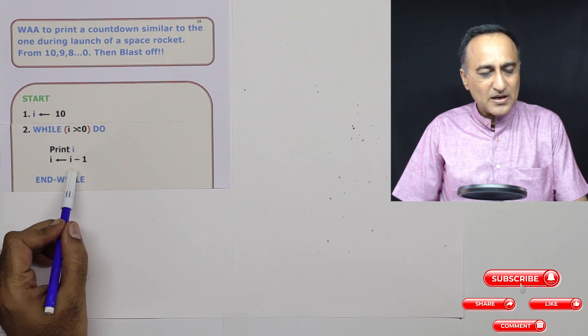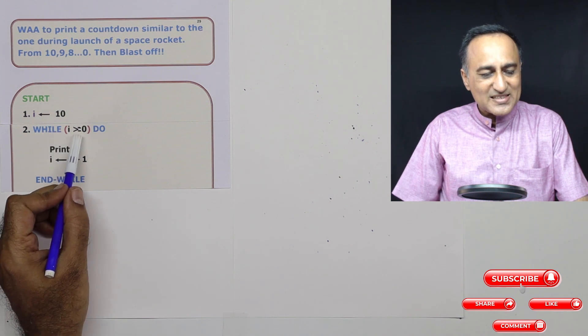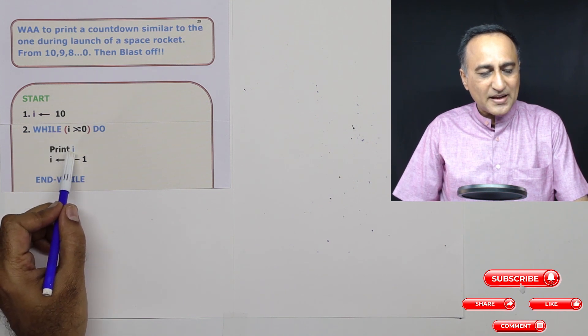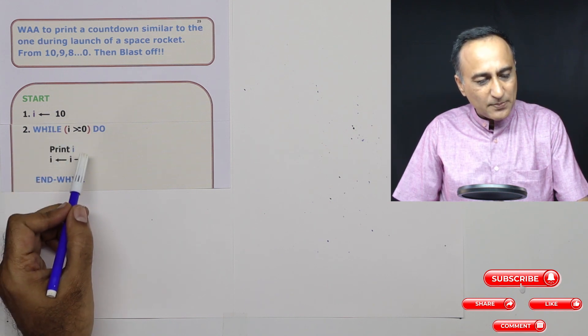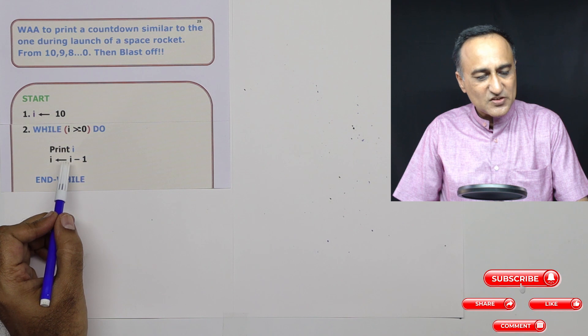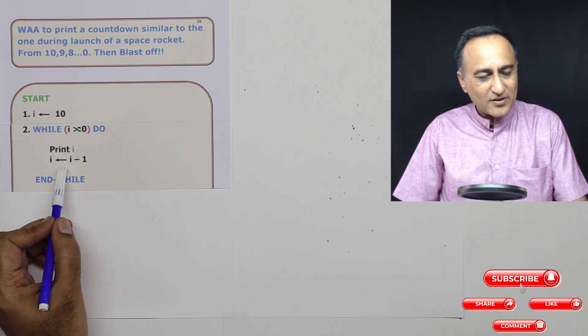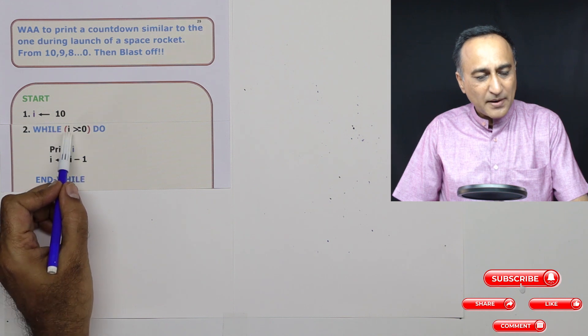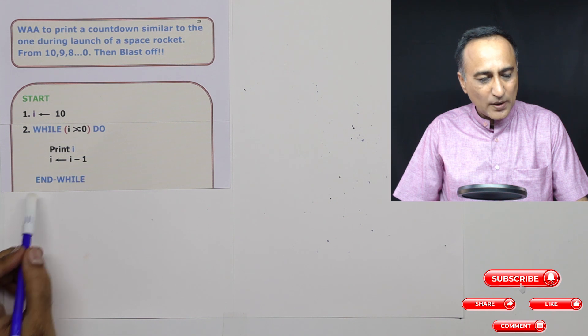I now next ends up becoming 9. You go back here, then 9 is greater than or equal to zero, it will print 9. I becomes 8. So this process will keep repeating till I reaches zero. When it prints zero, I after that will become minus one. Minus one is not greater than or equal to zero, it will come out of this end while.